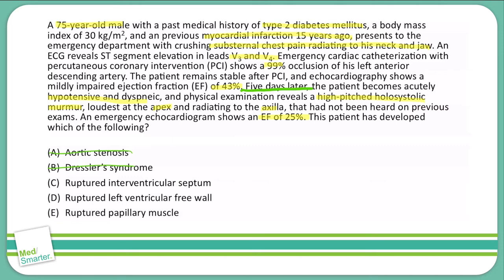A high-pitched, holosystolic murmur that's loudest at the apex and radiates to the axilla sounds very much like mitral valve regurgitation. If you remember your locations for each valve sound, the apex of the heart is where you hear the mitral valve best. Therefore, we have mitral regurgitation associated with a myocardial infarction five days after — we're dealing with a ruptured papillary muscle, answer E.